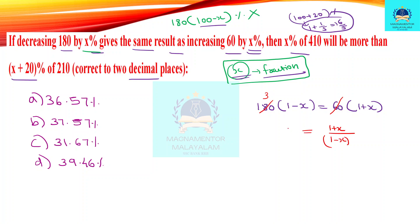The left side equals 3 by 1. We apply componendo and dividendo. The numerator is (1 plus x) plus (1 minus x), which equals 2. The denominator is (1 plus x) minus (1 minus x), which equals 2x. So 2 divided by 2x equals 1 by x.